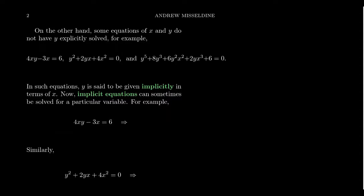On the other hand, some equations of x and y don't have y explicitly solved. For example, take this equation: 4xy minus 3x equals 6. This is an equation with some x's and some y's, and not every choice of x and y will solve it — so there's a relationship between x and y, but we don't have a y equals whatever. Y is somewhat concealed inside the equation. Another example: y squared plus 2yx plus 4x squared equals 0. And a more complicated one: y to the fifth plus 8y cubed plus 6y squared times x squared plus 2yx cubed plus 6 equals 0. These are all relationships for which y is said to be given implicitly in terms of x.